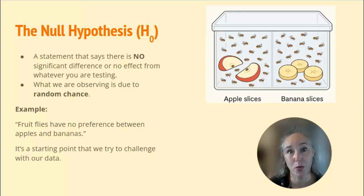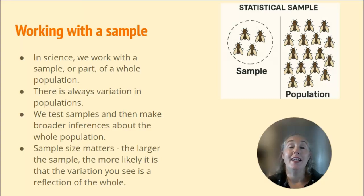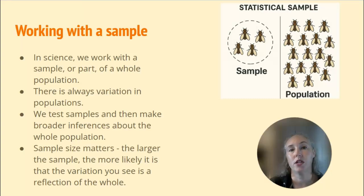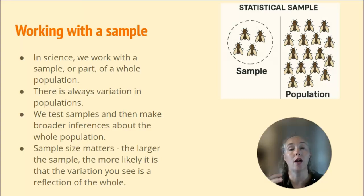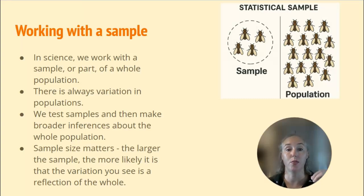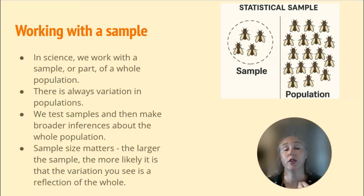It's a starting point and we use the data that we collect to challenge that hypothesis. Now it's important to remember that in science we always work with a sample — what we study is just whatever is right in front of us, it's part of a greater whole. So if we are looking at different animals and their behavior, we're testing that small sample. There's always variation in populations, and whatever data we get from the sample we then use to make broader inferences for the greater population.